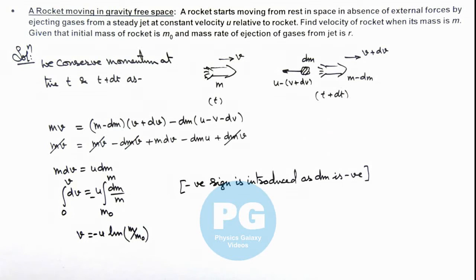So if we introduce a negative sign here the result will be u ln of m₀ by m. So this will be the final result of the problem.